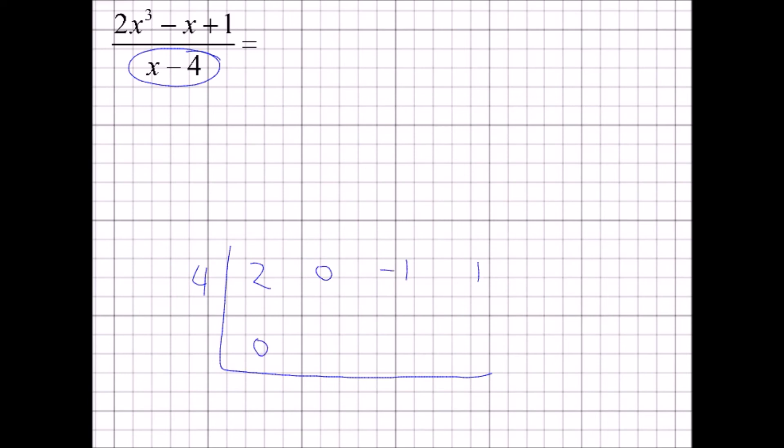Always put 0 there. Add up those numbers, now multiply with the 4, add, multiply with the 4, add, multiply with the 4, and I get 124. Separate that off.